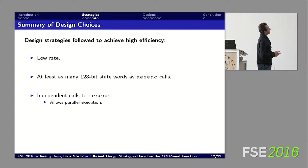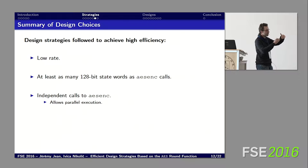Summarizing the design choices: we want a low rate to achieve high performance; we must have at least as many state words as AES calls in the design; and the calls to the AES round function must be independent, because if two are sequential we have to wait for the first, so the calls have to be independent.